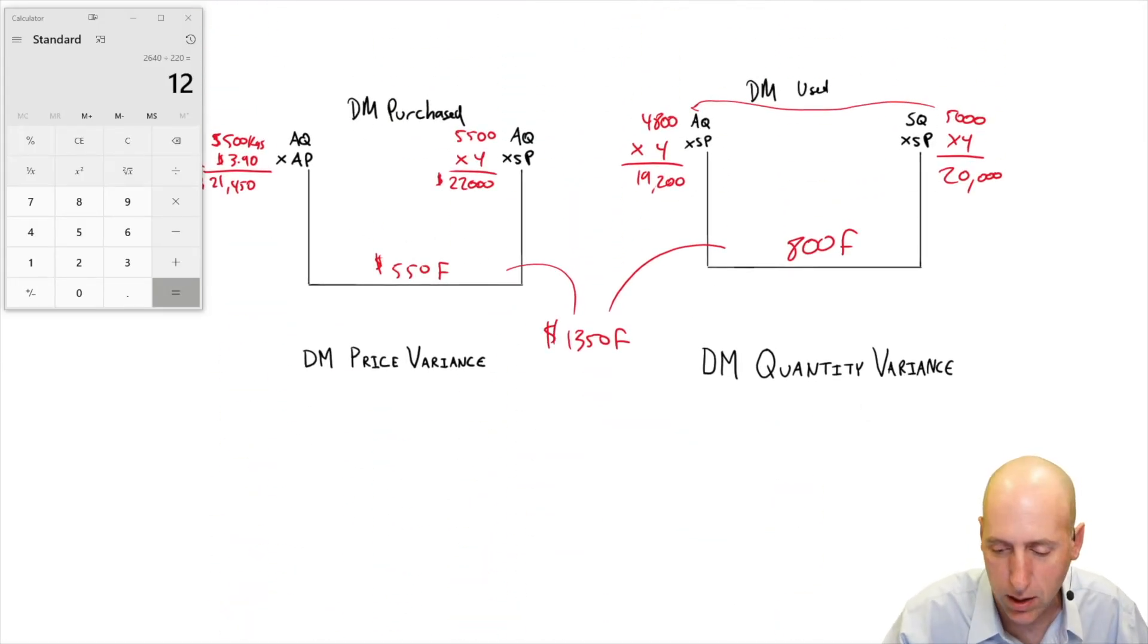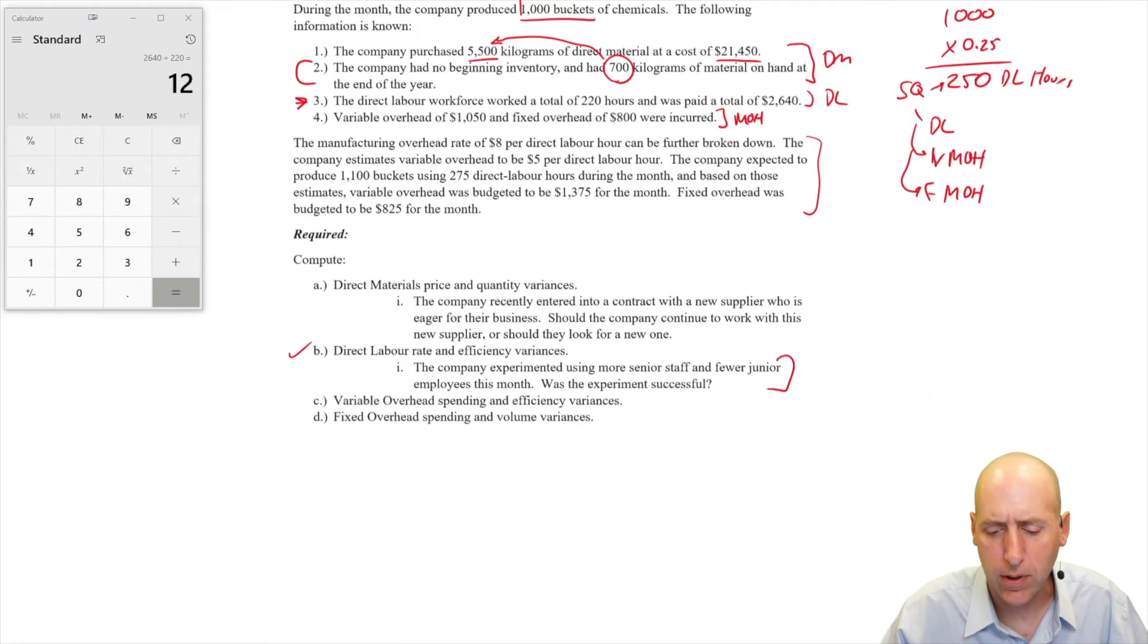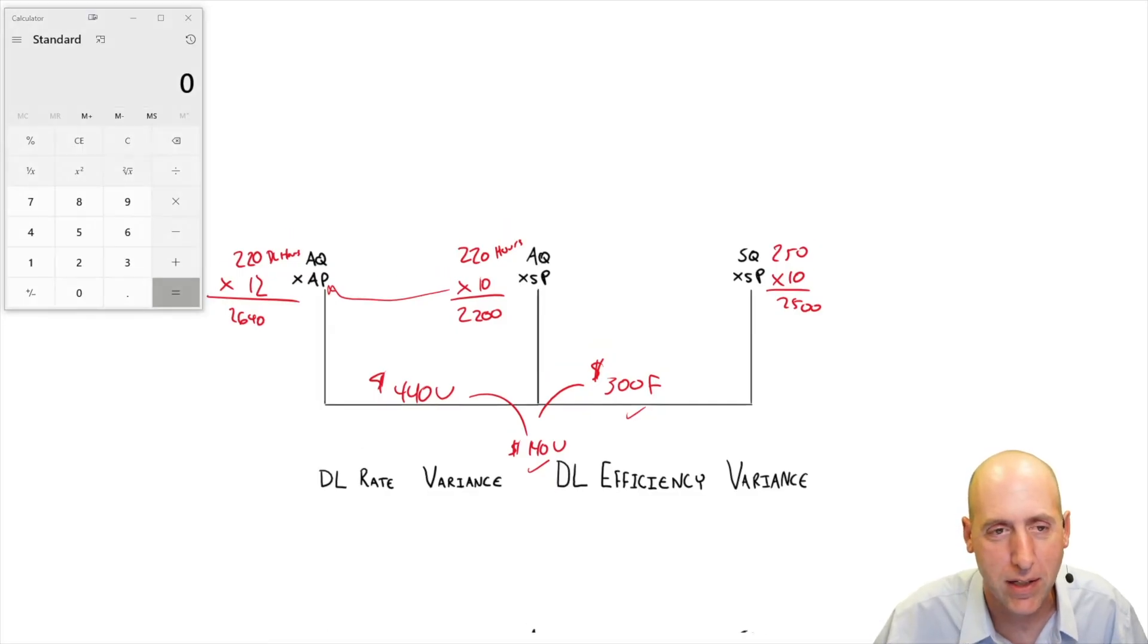To answer the question: the company experimented using more senior staff and fewer junior employees this month. Was the experiment successful? Well, we were more efficient, no doubt about that. But overall, no, I wouldn't call it a success. It was costly - it cost us some money to do this. I wouldn't recommend sticking with this labor mix going forward. A million qualitative things would go into this type of decision, staff availability being chief among them. But given the limited amount of information, if we just have an unlimited supply of labor, no. This is not the premium mix that we were looking for.